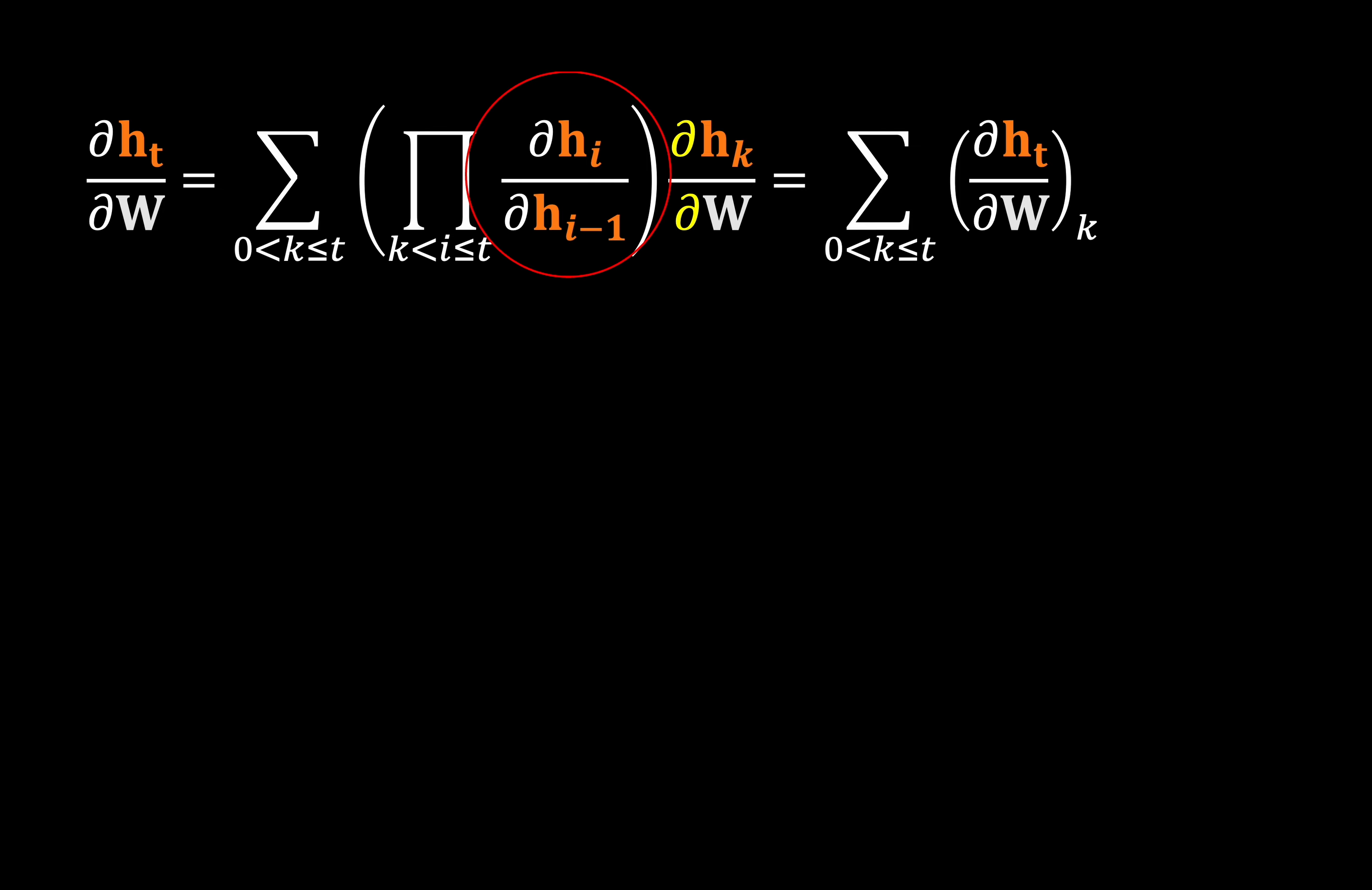But now let's see how we can actually calculate this derivative here. We've already seen our H of T depends on H of T minus 1. And here for simplicity, we use Z of T to denote the operand of the activation function. So we can now express this derivative using the chain rule. And now all we have to do is express these two terms.